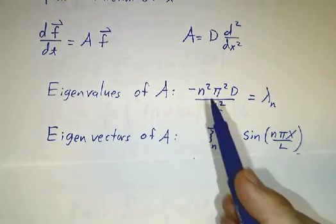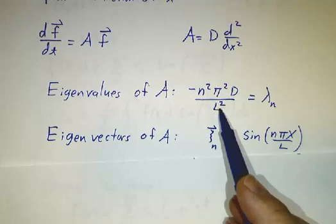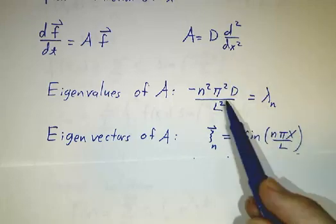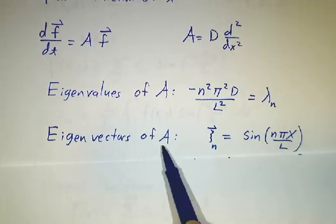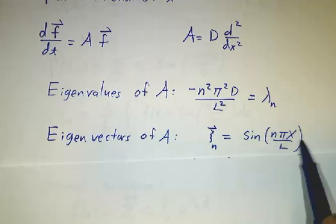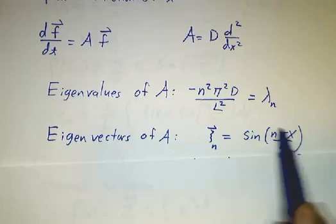The eigenvalues are minus n squared pi squared over l squared times this constant d. And the eigenvectors are just sin(nπx/l). They're the Fourier series, Fourier modes.